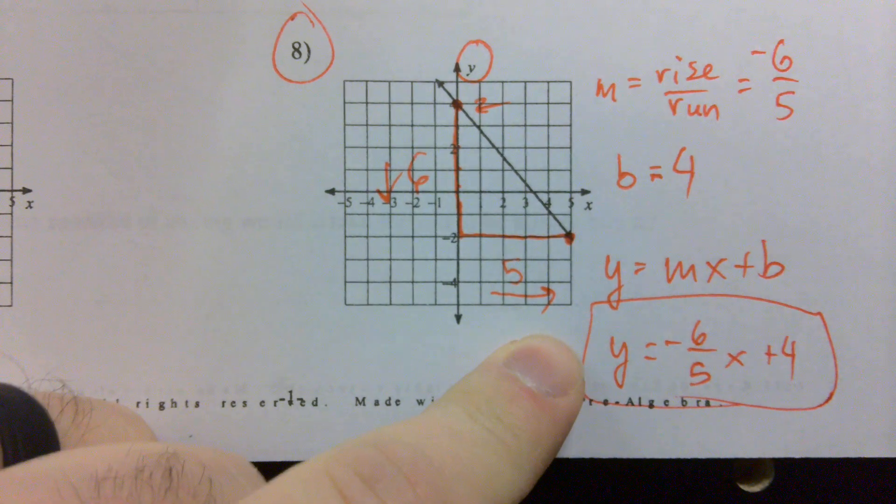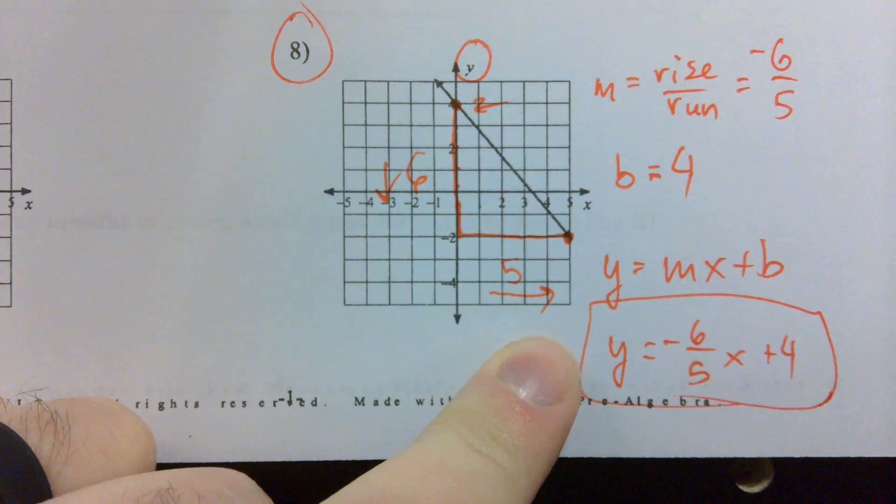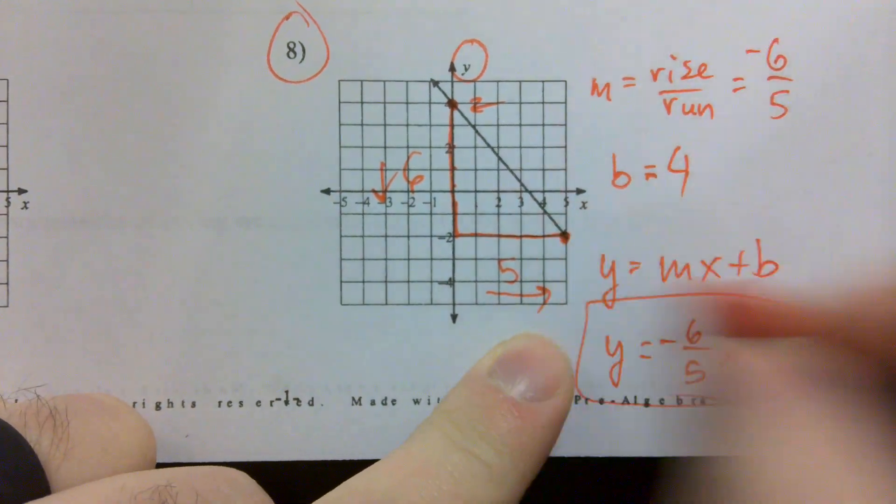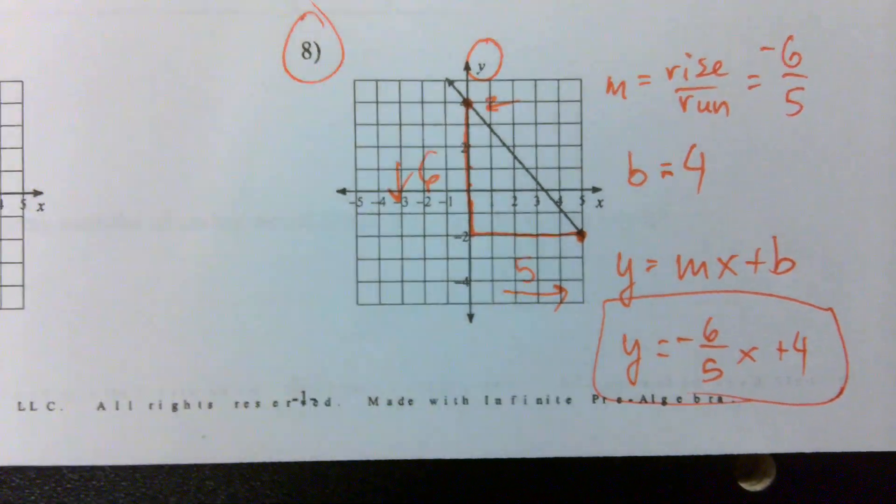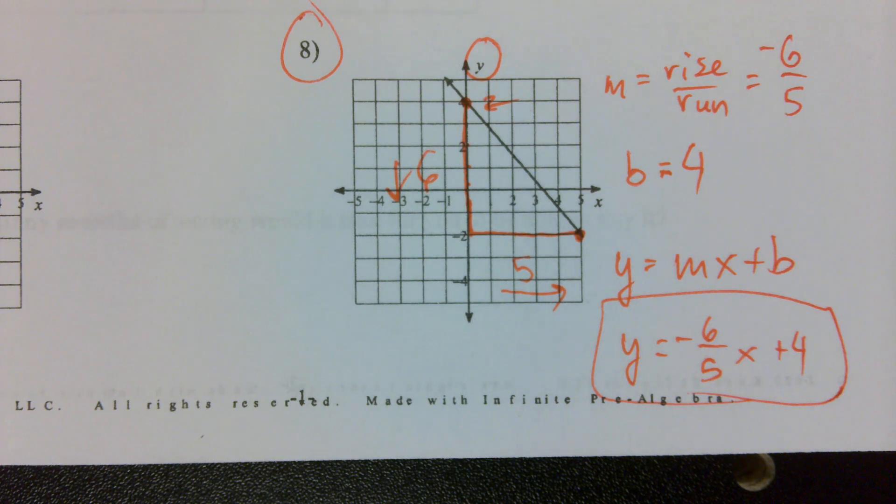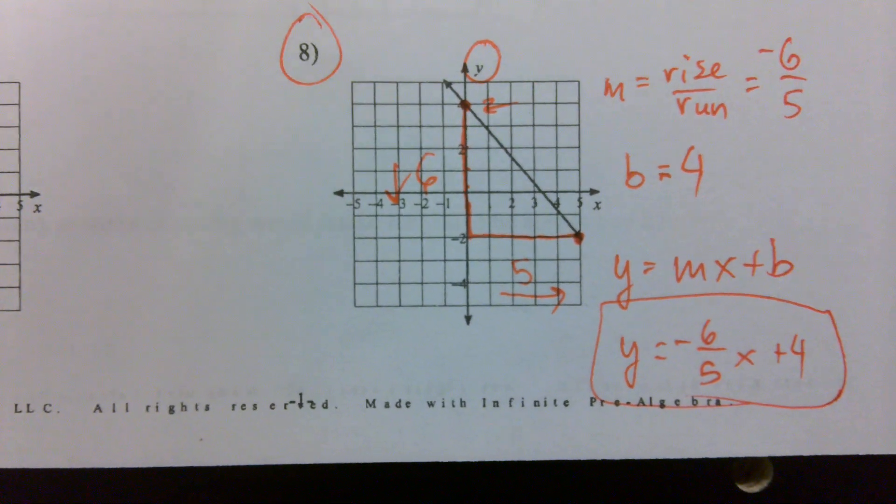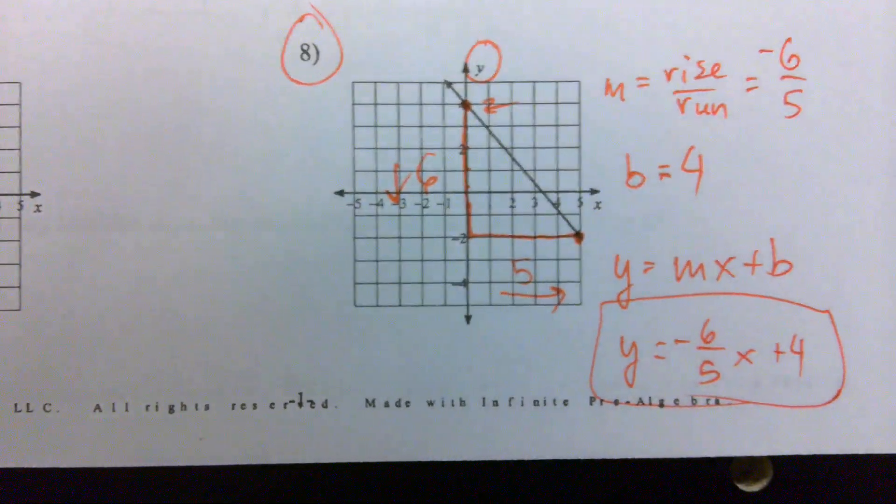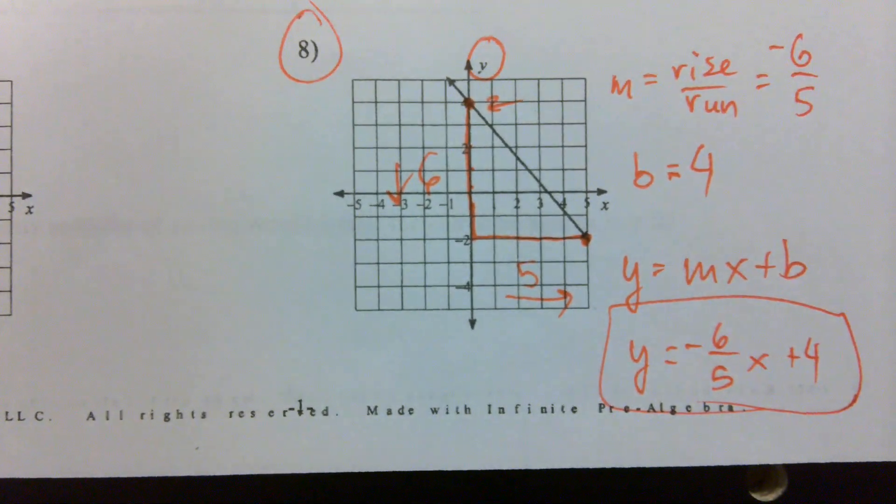If you made any mistake, whether you miscounted your squares, got the wrong value for B, make those changes so that you know what to do when you see it on the test.